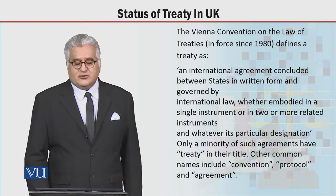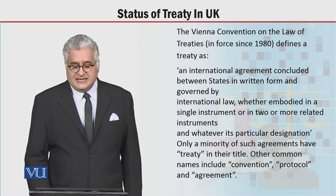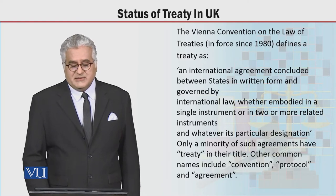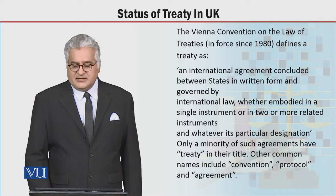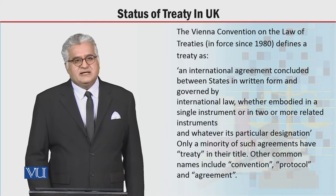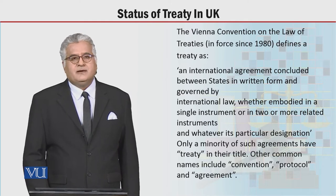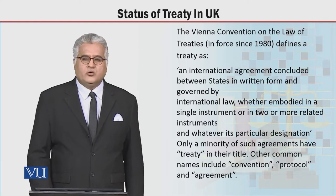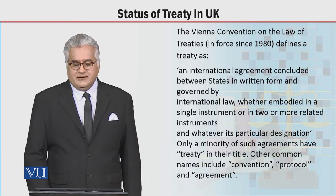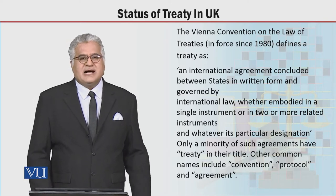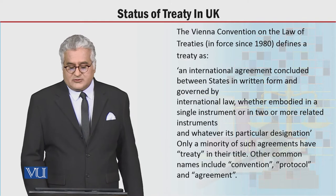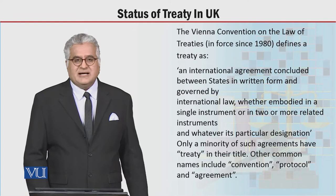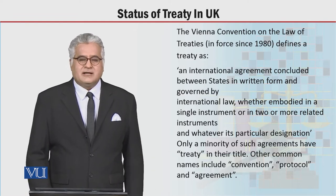The Vienna Convention on the Law of Treaties defines treaty as an international agreement between states, jo tahriri hota hai, aur yeh international law ke tahat govern hota hai. A treaty, eek instrument mein contained ho ya zyada instruments mein contained ho, aur iska koi khas designation nahi hai. Isko convention bhi kaha ja sakta hai, protocol bhi kaha ja sakta hai, aur agreement bhi kaha ja sakta hai.